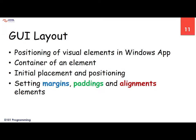The first concept is GUI layout. All those buttons, input fields, checkboxes, radio buttons, and labels need to go somewhere — that's the layout. We have a window rectangle where we put our controls so the user can interact. Layout means the positioning of visual elements in the Windows application container — initial placement, positioning, and setting values.